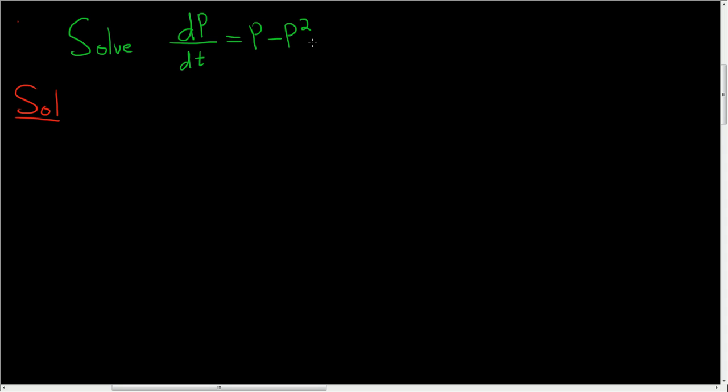We're going to divide both sides by p minus p squared. So the left-hand side will be dp over p minus p squared. And then at the same time, we're going to multiply by dt, so dt dt. And then so these will cancel, and then so here we'll just have dt.